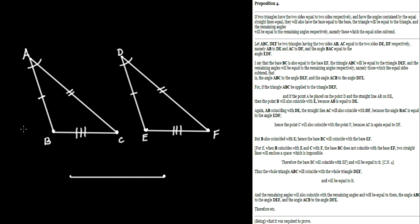That inference that things which coincide are equal, that's common notion number four or axiom number four. And our next inference is going to be, thus the whole triangle ABC will coincide with the whole triangle DEF. The whole triangle ABC will coincide with DEF and will therefore be equal to it. Same common notion number four. And the remaining angles will also coincide with the remaining angles.